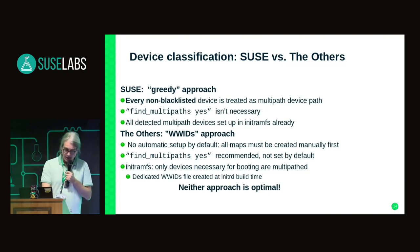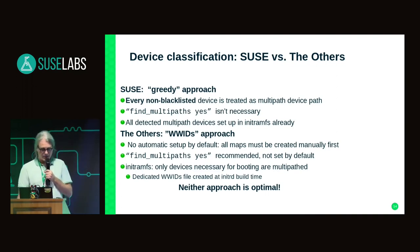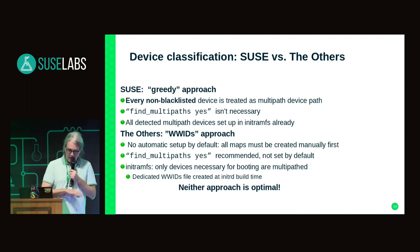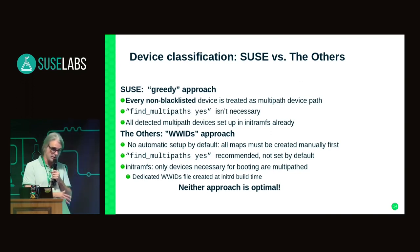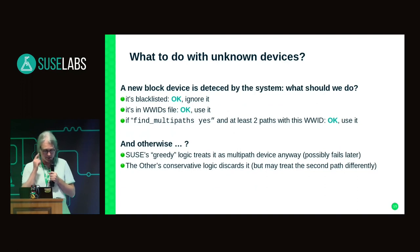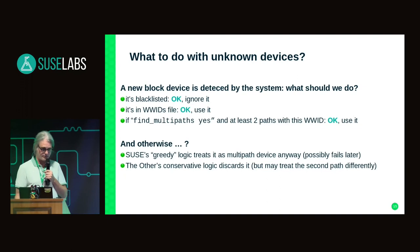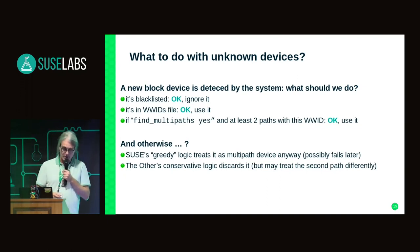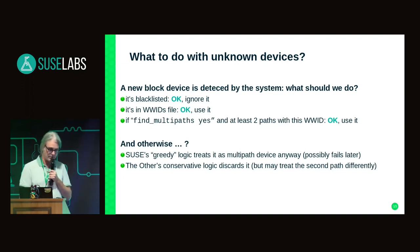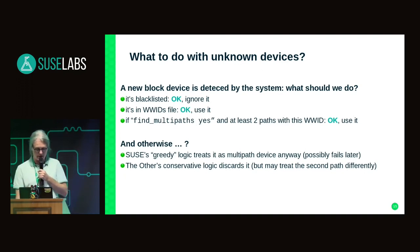In the initrd, they construct a blacklist which explicitly forbids any device which is not strictly necessary to detect the root file system. Neither approach is really optimal. So: if we find a new device, if it's blacklisted we ignore it; if it's in the worldwide IDs file we use it; if we have find_multipath=yes and we have two paths we use it. If we have only one path, SUSE logic would just grab it and treat it as a multipath device, whereas the other distributions would discard it and say they don't know this device.